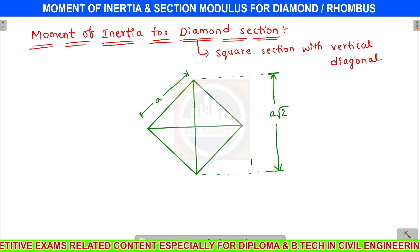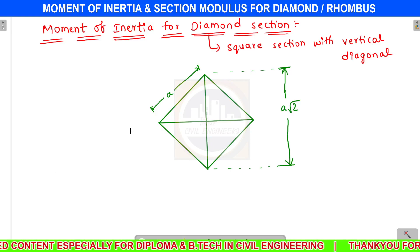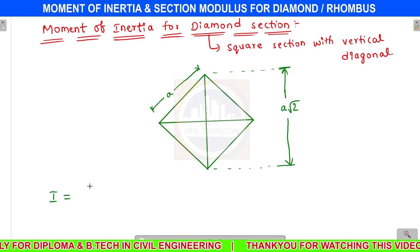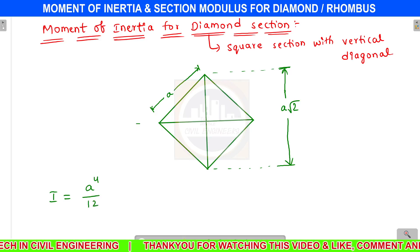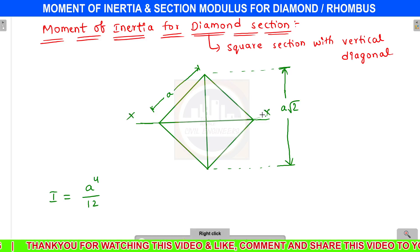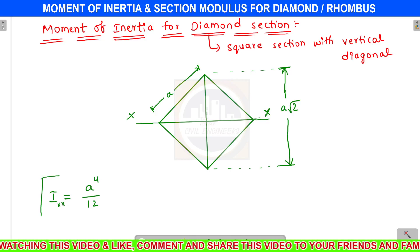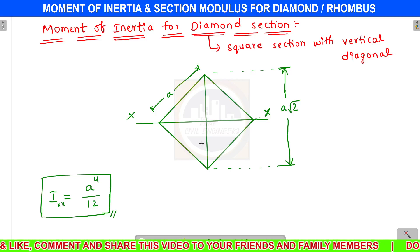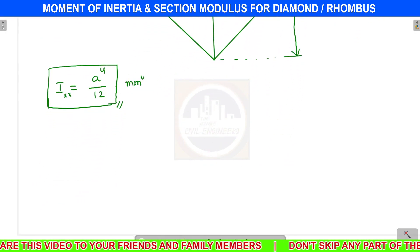So A root 2 is the diagonal. Now the moment of inertia I — it will be similar to A to the power 4 divided by 2 for a square section. Here, about the XX axis, that means the center of gravity axis, I_xx is A to the power 4 by 12. Units are M to the power 4.